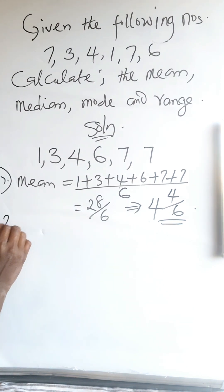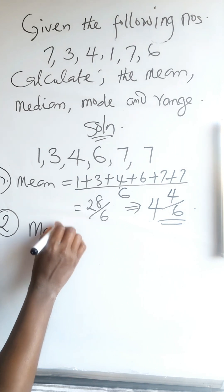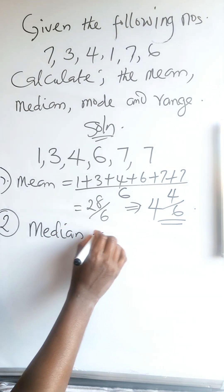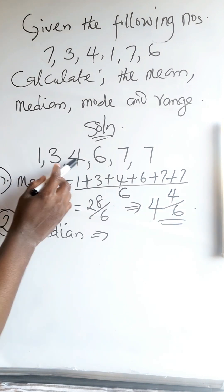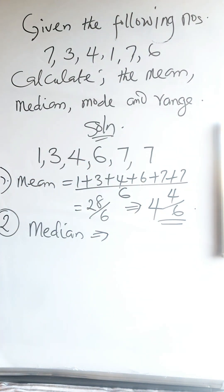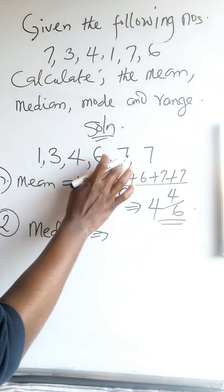Now the second one says the median. The median number is the middle number if the numbers are arranged in either ascending or descending order. That's why I started by arranging in ascending order. Now you calculate: you have 1, 2, 3, 4, 5, 6. Now because you have 6, you won't really get one single middle number.